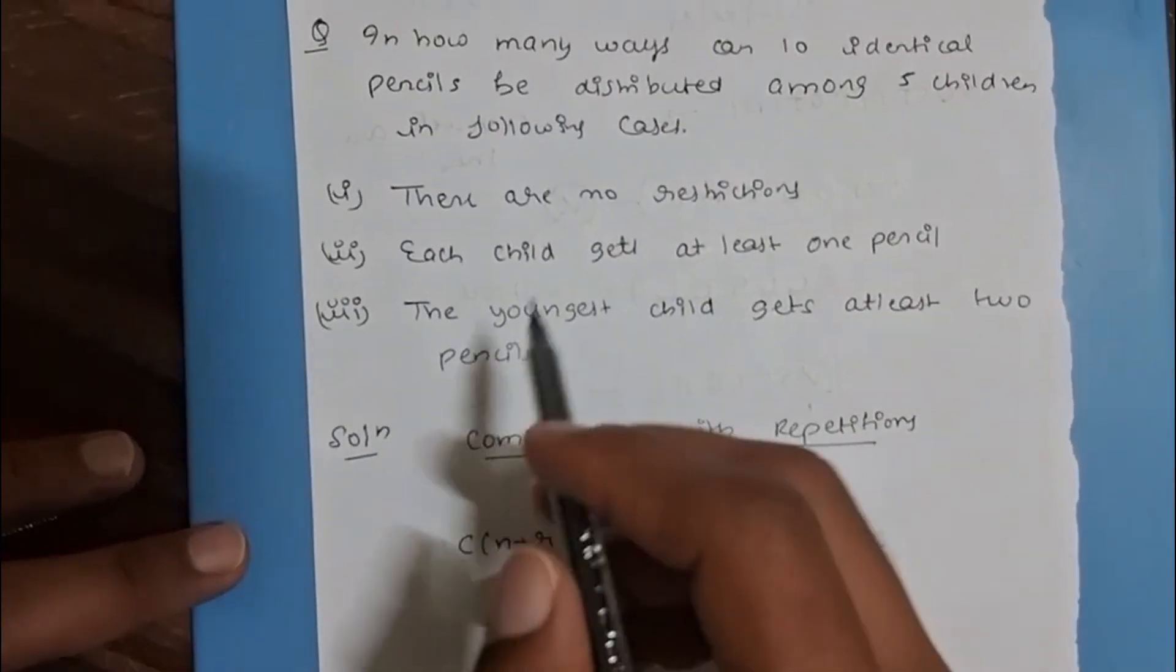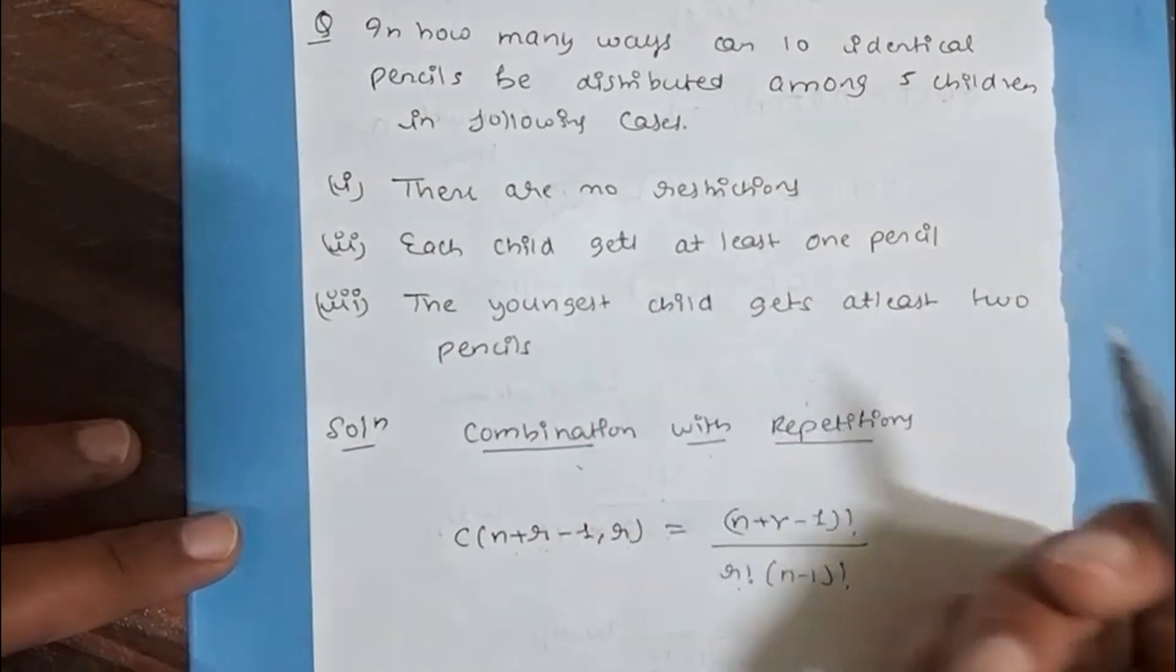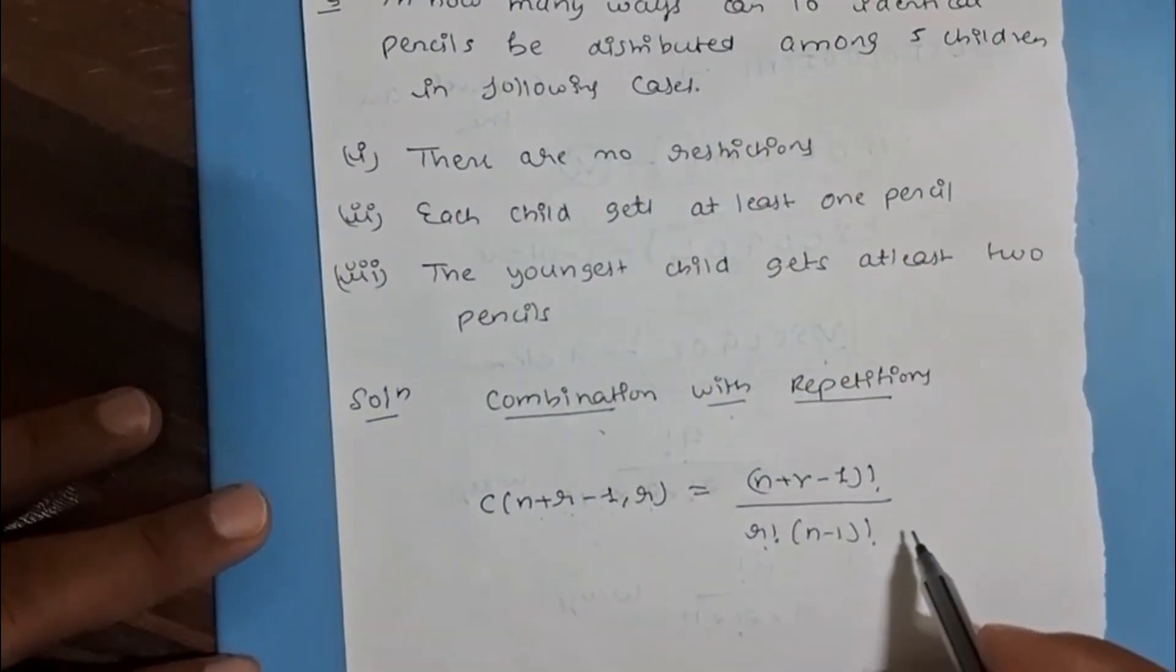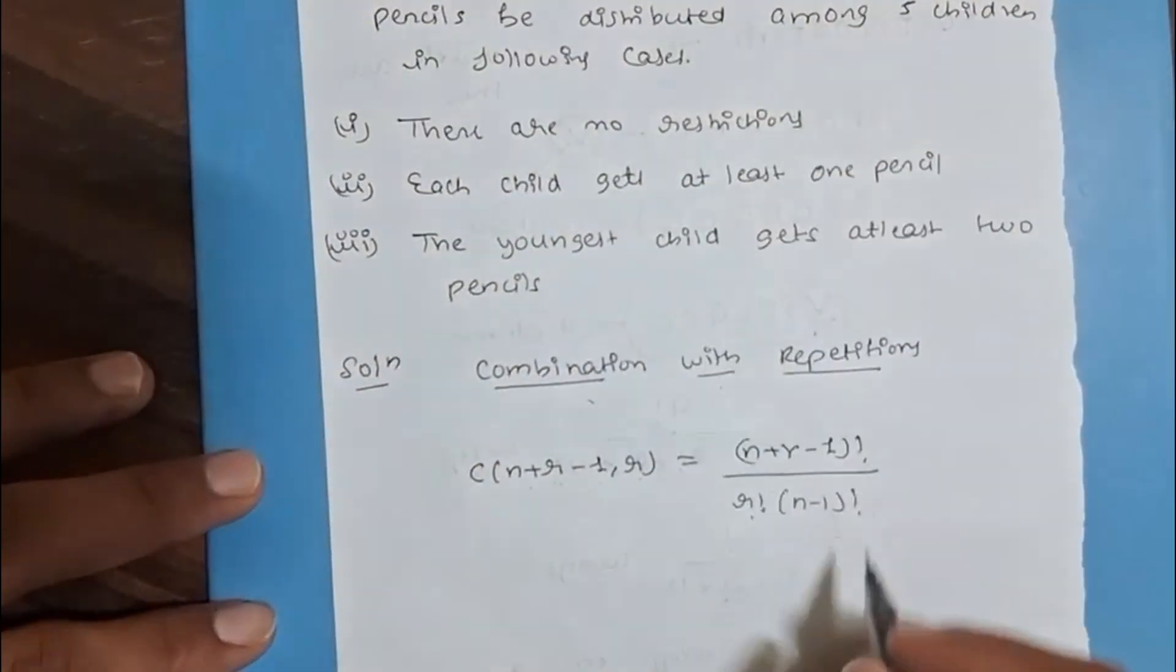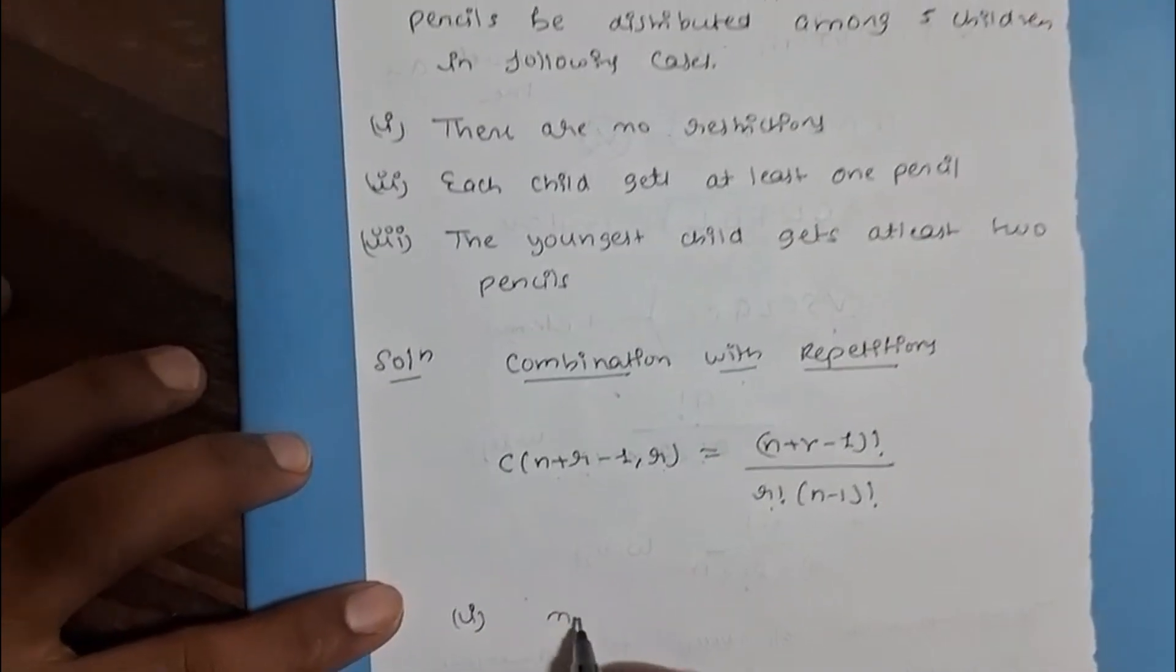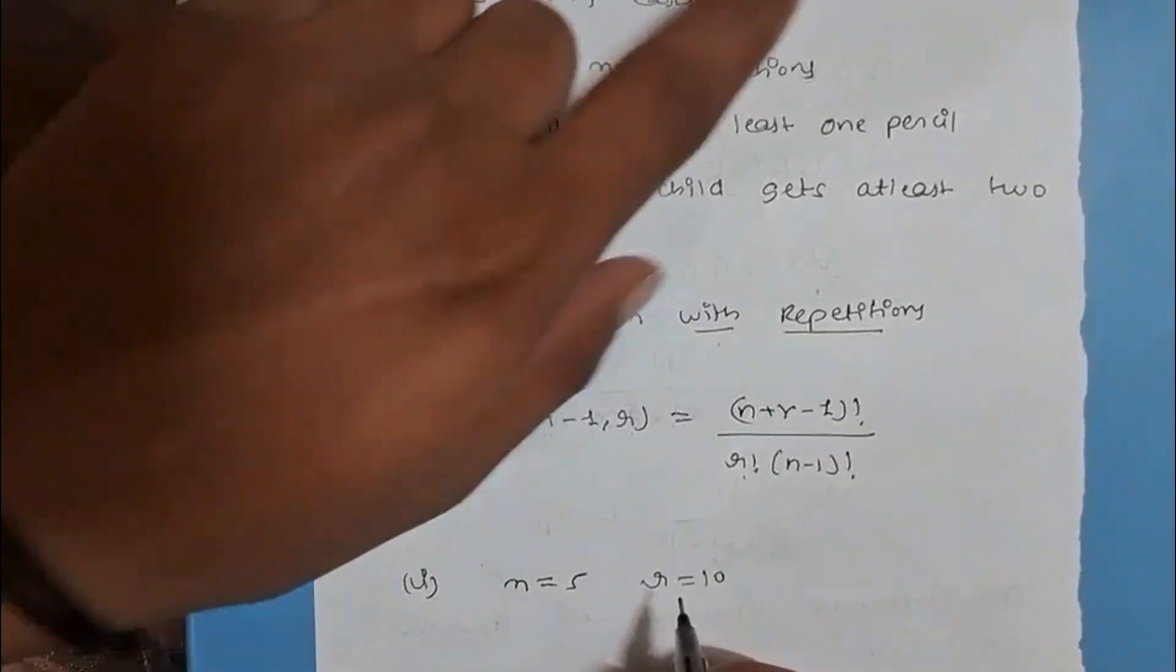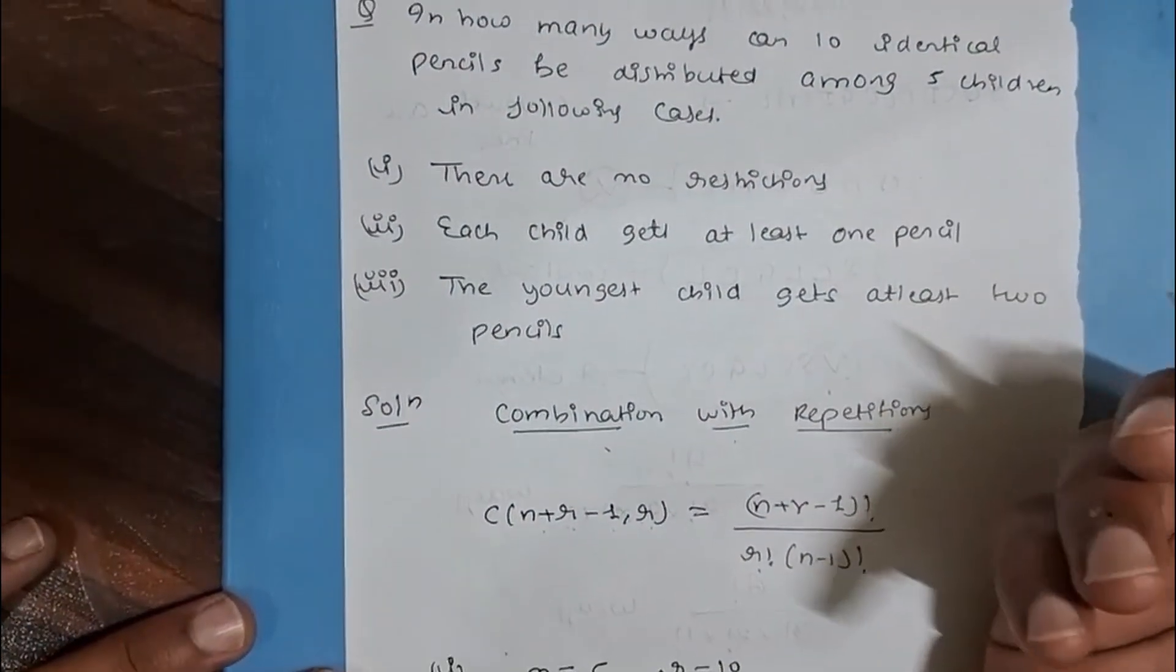We are solving the first question. There are no restrictions. No restrictions means repetitions are allowed, so we are using this formula. What is the value here? In the first part, n = 5 and r = 10 because identicals are there and repetitions are there. Identical means repetition is there.